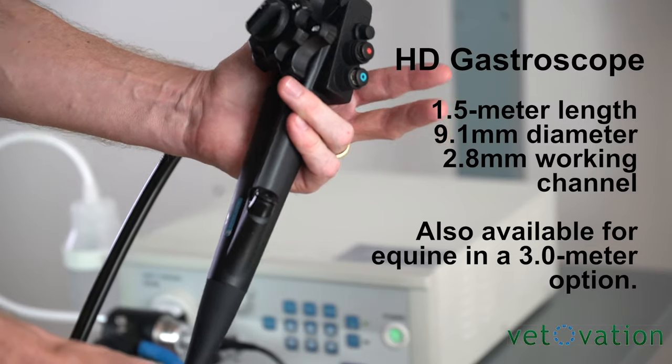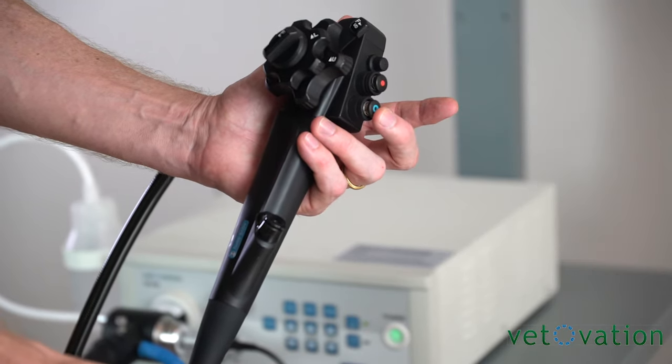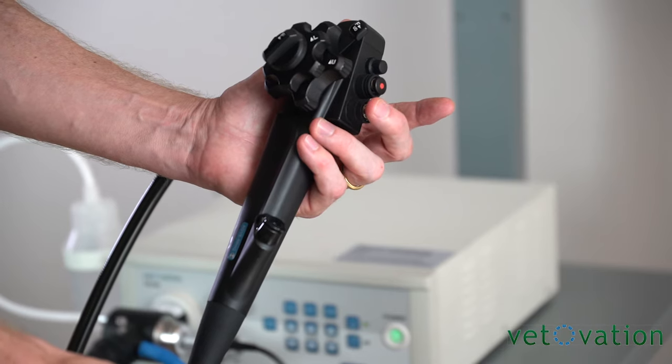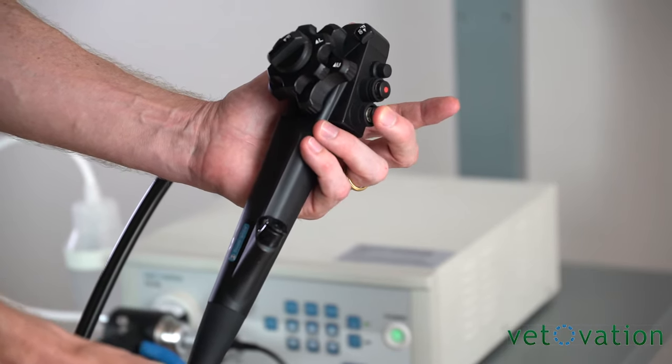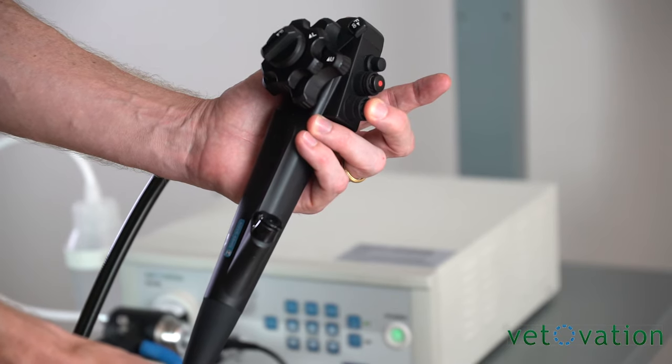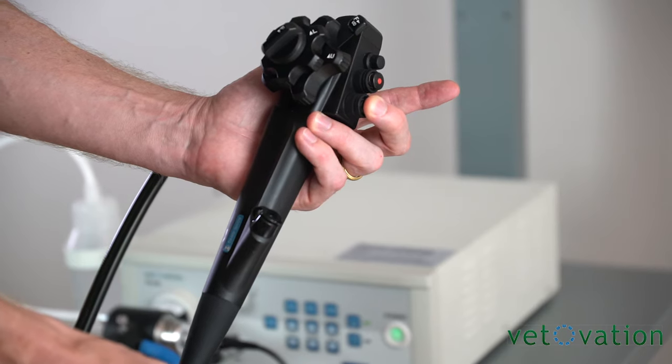Most people will hold the gastroscope in their left hand. That gives you easy control of the blue button which controls air going into the stomach to distend the stomach and give you a working space. If you just depress the blue button that will then give you fluid across the tip of the scope. If it gets smudged you can wipe it off.